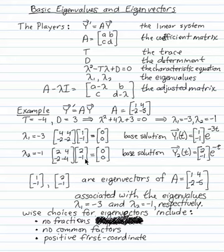So [2, -1] is an eigenvector for the eigenvalue -1, and I have a base solution: y2 is [2, -1] times e^(-t).